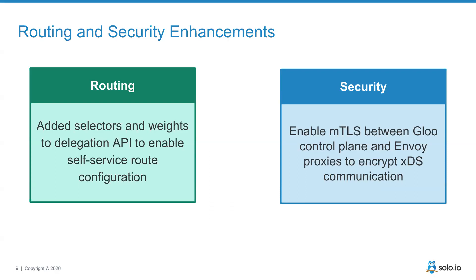By using selectors, we can decouple the configuration of your domain and virtual service from the route table itself. Users have leveraged this to scale a self-service model where individual development teams who own their services can also own a route table for routes to those services, while a central team manages the domain and how it all wires up in a virtual service. We also introduced a feature called weights on route tables to help inform Glue about how routes should be ordered when assembled.